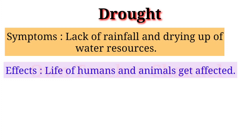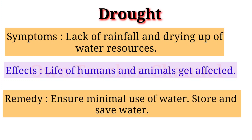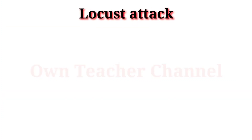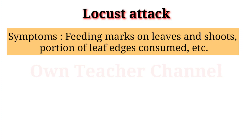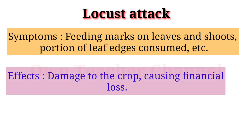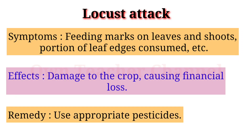Drought — Effects: life of humans and animals gets affected. Remedy: ensure minimal use of water, store and save water. Locust attack — Symptoms: feeding marks on leaves and shoots, portions of leaf edges consumed, etc. Effects: damage to the crop causing financial loss. Remedy: use appropriate pesticides.